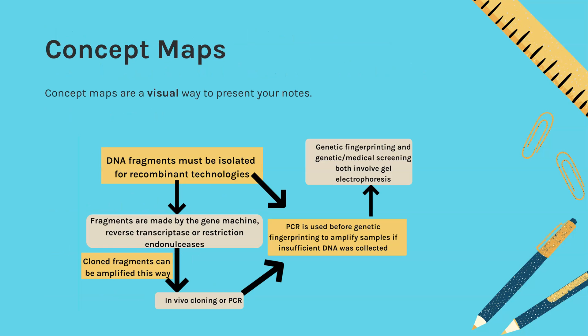Concept maps are just a visual way to represent your notes. So it's organizing information, but the key thing is the way it's organized, there are links. So it's not just like a spider diagram where you just have everything you know coming out of the topic heading. Every arrow is representing some kind of link and we've got an example here. DNA fragments must be isolated for recombinant technologies. That links to then how we get those DNA fragments and that could be in vivo cloning or in vitro with PCR.